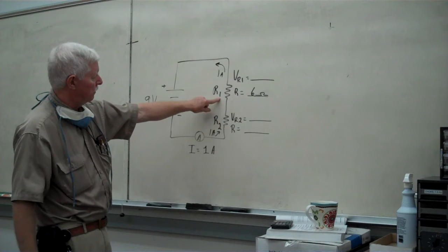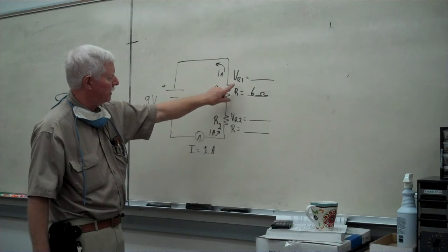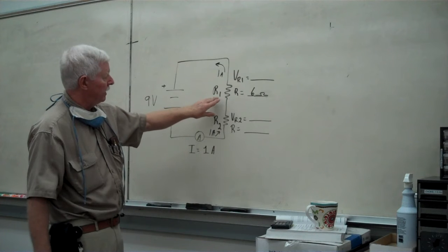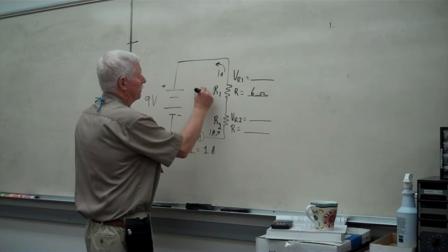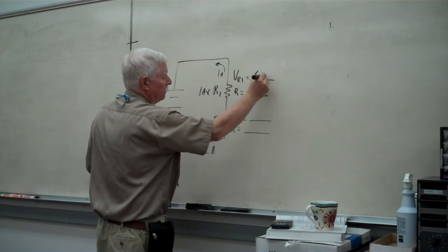Because we've got 1A that's flowing through here, and we want to calculate what's going on down here, we can take this voltage and derive it from 1A times the resistance of 6 ohms, and we come up with 6 volts.